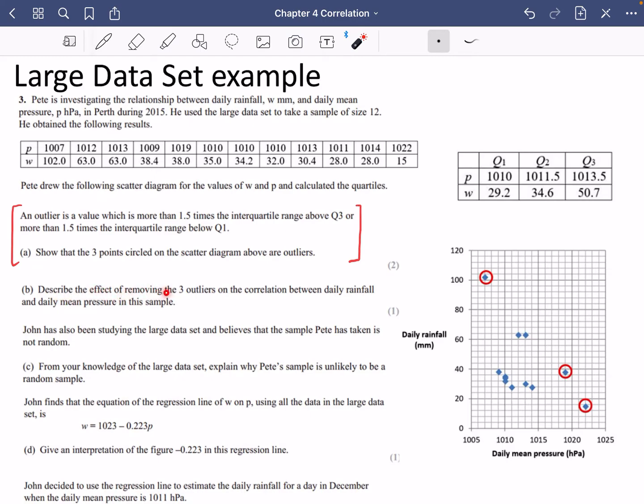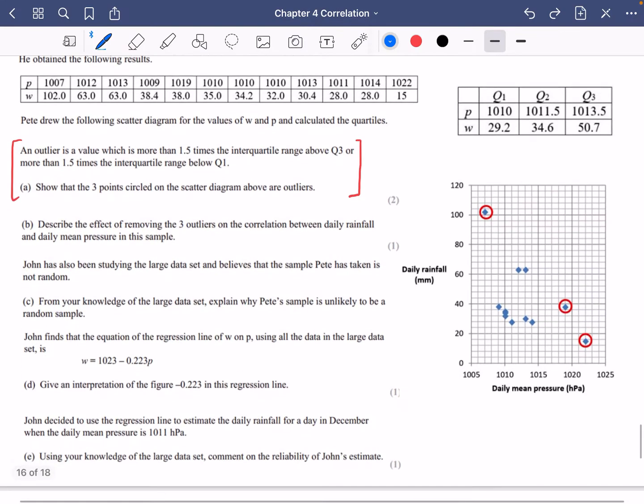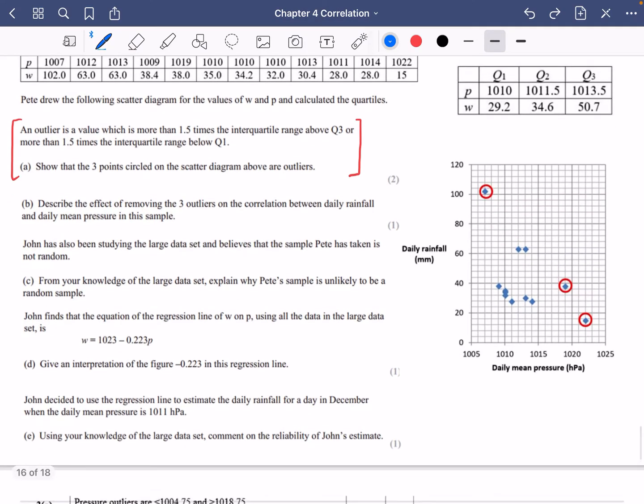Describe the effect of removing the three outliers on the correlation between daily rainfall and daily mean pressure in this sample. So beforehand if I was to give you this graph I think you would all probably say it looks like it's some kind of negative correlation. But if we remove these three that we've got here suddenly it looks like there is no correlation. So the relationship is going from negative correlation to no correlation.